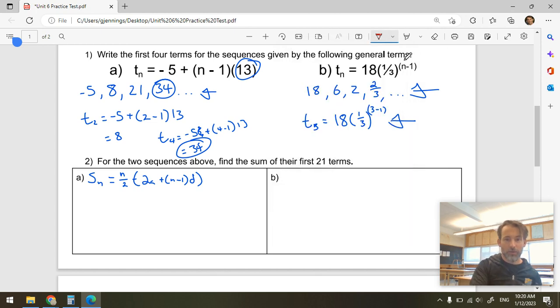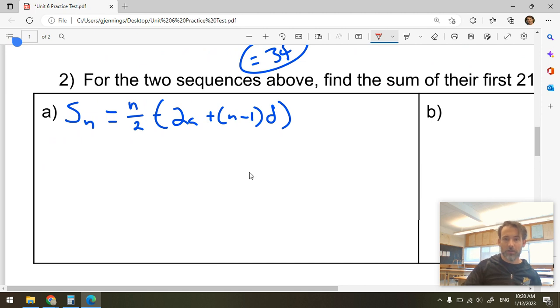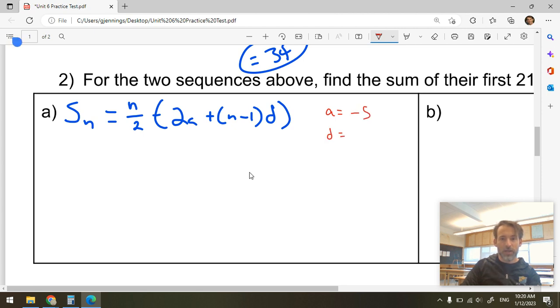Here we go. Whoop. Yep. All right. Here we go. So my little chart is going to be A equals, well, the first term was, what was it, minus 5? Minus 5. The common difference was 13, and the number of terms I've been asked for is 21. All right?